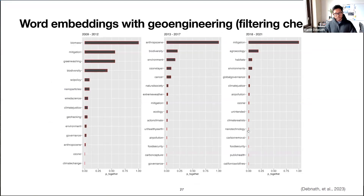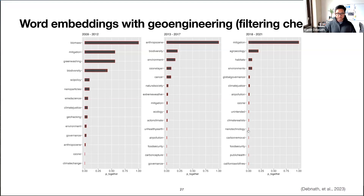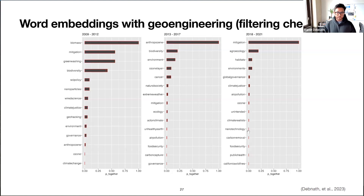Filtering out the chemtrails conspiracy and misinformation, the word embeddings reveal genuine concerns as well — around what happens to biodiversity, to nature, and to our global mitigation efforts. A lot of scientific discourse talks about whether applying climate engineering will move countries away from their promised mitigation pathways. The bigger genuine concern is that some country could say, 'I have the technology, I don't need to invest in moving away from coal or fossil fuels because I can offset it with this technology.'